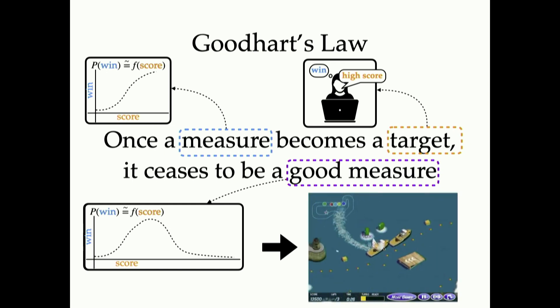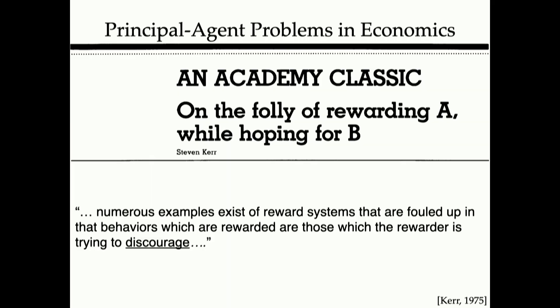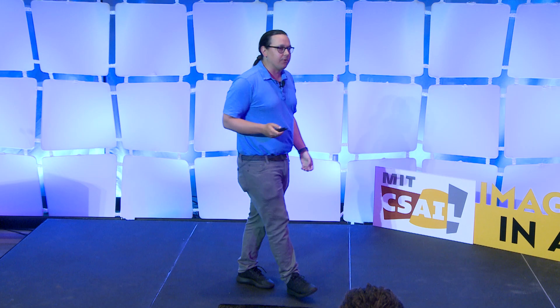Now this is a really old phenomenon. When I put this up on the slide, a bunch of folks laughed. And it's because this is something we're all intimately familiar with. In the field of economics, there's my favorite paper of all time with a paper title that just summarizes the whole thing. It's called On the Folly of Rewarding A While Hoping for B. It says, numerous examples exist of reward systems that are fouled up. The behaviors which are rewarded are those which the rewarder is trying to discourage.